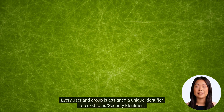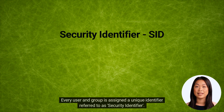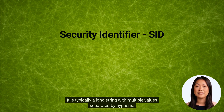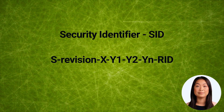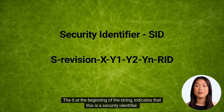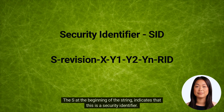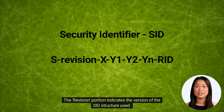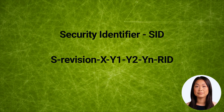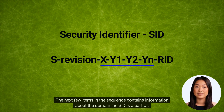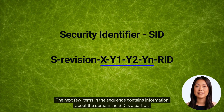Every user and group is assigned a unique identifier referred to as a Security Identifier (SID). It is typically a long string with multiple values separated by hyphens. The 'S' at the beginning of the string indicates that this is a security identifier. The revision portion indicates the version of the SID structure used. The next few items in the sequence contain information about the domain the SID is a part of.